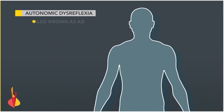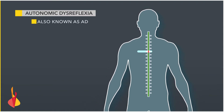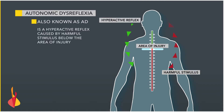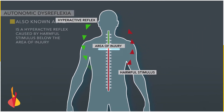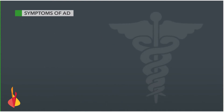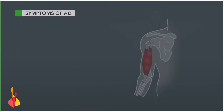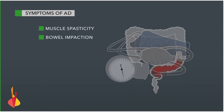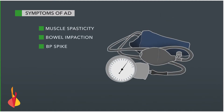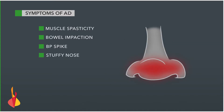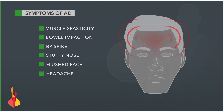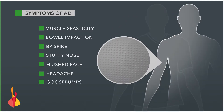Autonomic dysreflexia, also known as AD, is a hyperactive reflex caused by harmful stimulus below the area of injury. Symptoms of AD include increased muscle spasticity, bowel impaction, a spike in your baseline blood pressure, stuffy nose, flushed face, headache, goosebumps, and sweating.